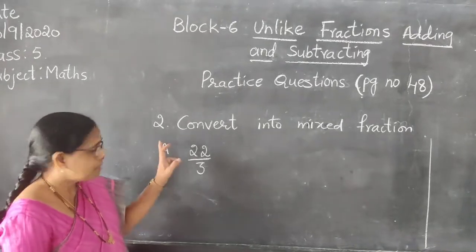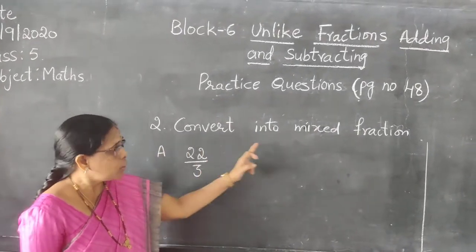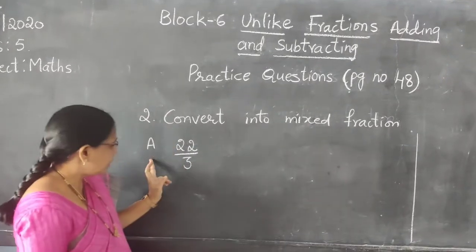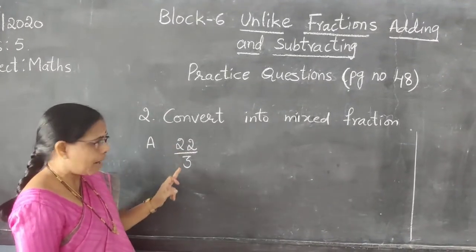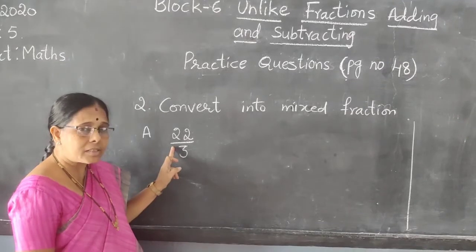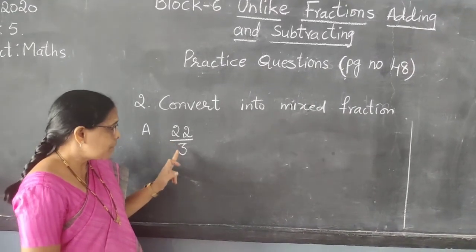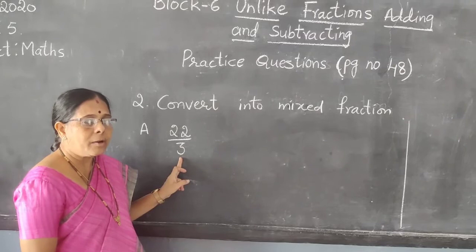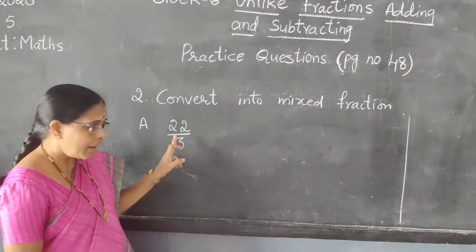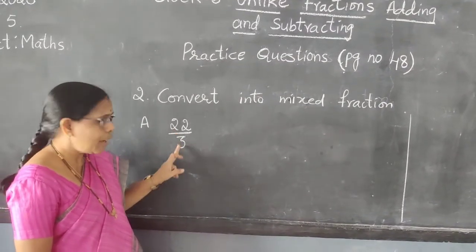Now we are going to explain converting into a mixed fraction. A is 22 by 3. This is an improper fraction. You have to convert it into a mixed fraction. How do we convert it, children? By dividing 22 by 3.